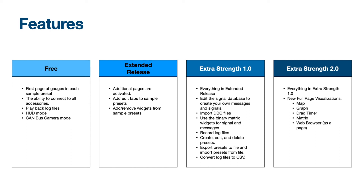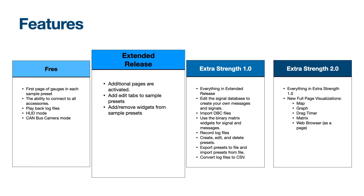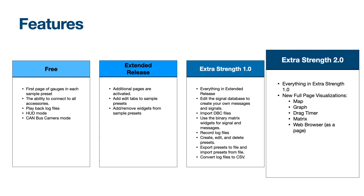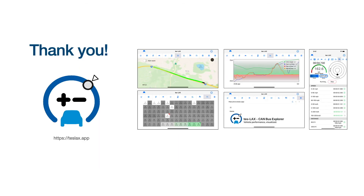In summary, TESLAX is packed with many great features. The basic features of the application are free. All users are able to connect to an accessory and visualize the first page of gauges in the sample presets. This is a good way to see if TESLAX works with your accessory and vehicle. Before purchasing any additional features, it is recommended that you try out as much of the free functionality as possible and make sure your accessories work as expected. The Extended release purchase activates the additional pages of the sample presets and allows you to edit the visualization and add tabs and gauges by picking from the signal database found in the bundled presets. Extra Strength 1.0 adds a host of additional features and allows you to edit the signal database and create your own presets. With the new Extra Strength 2.0 feature set, the new full-page visualizations become available. A one-time 5-day demo is available for users to try out all these features before purchase. And that's the overview, so thanks for watching. Please check out TESLAX 2.0, now available in the App Store.